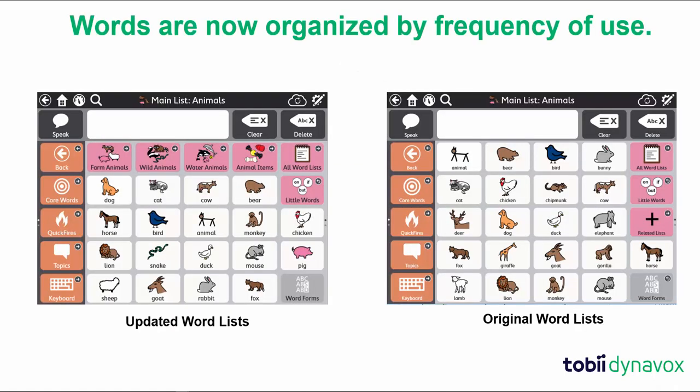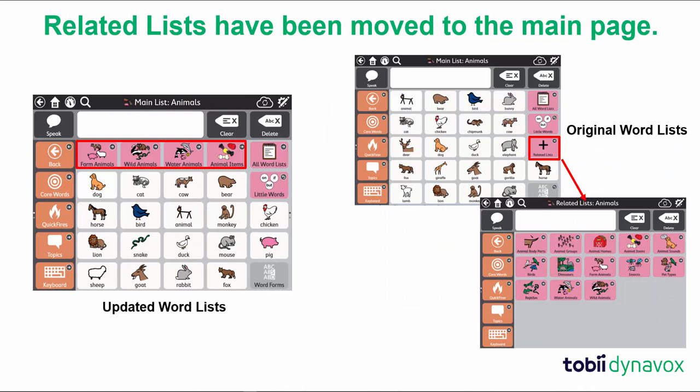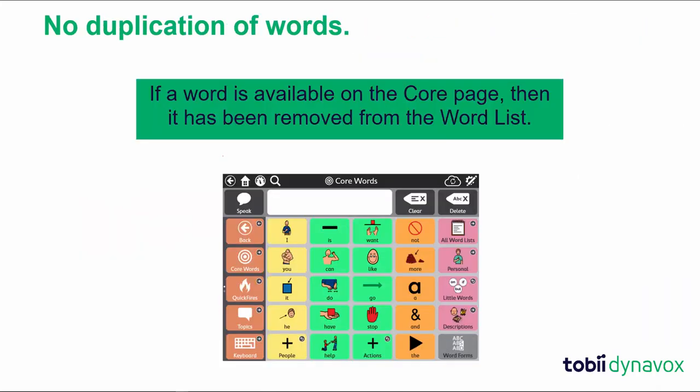We have now organized words by frequency of use instead of alphabetically. This allows individuals to get to the words they use often in a faster and more efficient way. We moved related lists to the main page to make it faster to access additional vocabulary. These related word lists have been limited to one row, and all word lists have no more than two pages of vocabulary. This will reduce the amount of swiping or scrolling required to get to the words you need. The words available on the core pages have now been removed from the related word lists, so that no words are duplicated.